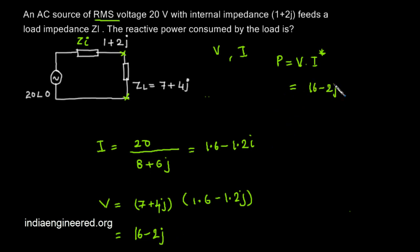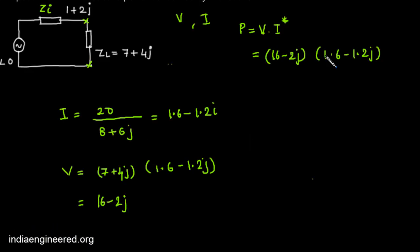Now we can substitute it here, that is 16-2j into the conjugate of current, which will be 1.6-1.2j. So this is the current. Now we need conjugate, that means 1.6+1.2j. Now solving this we will get the final answer as 28+16j. Now we have two terms, this is the active power consumed by the load.